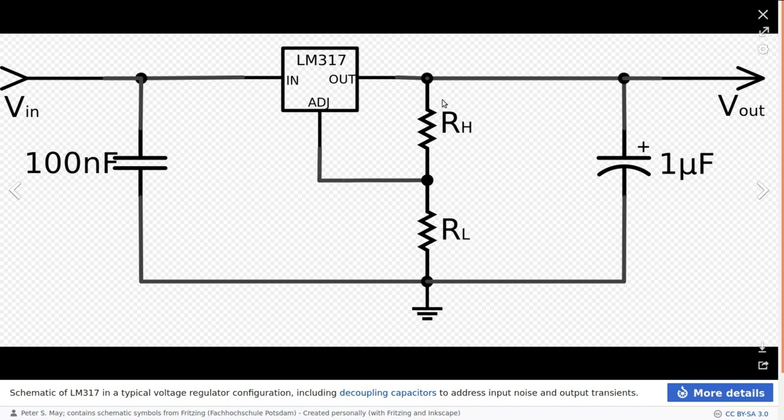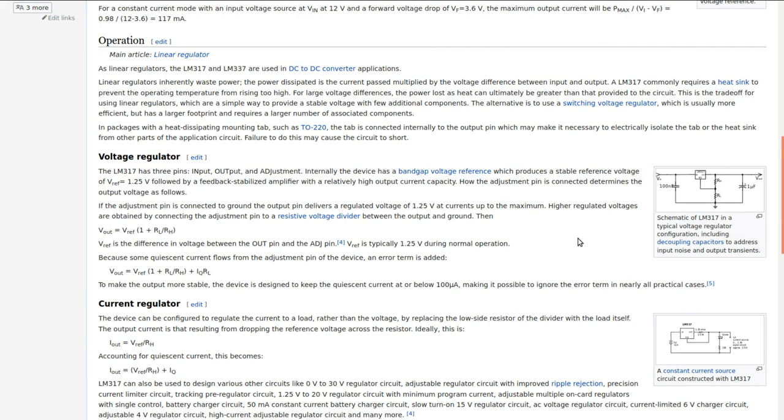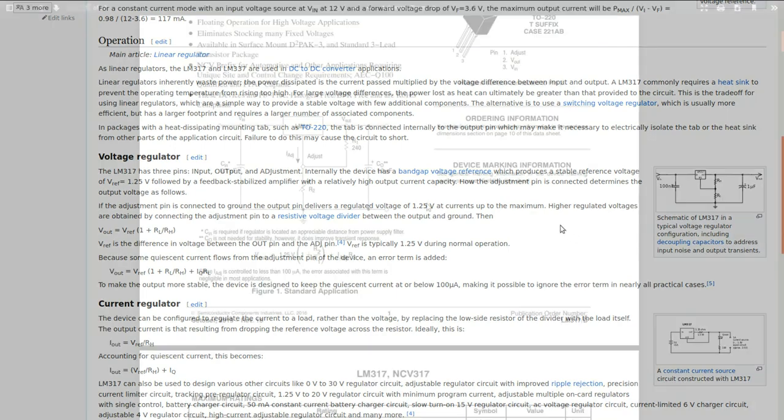You do it with a pot in there as a voltage divider and set it to what you want, then measure it and put in fixed resistors if you choose to, or you can just leave the pot in there and have an adjustable power supply like this one.